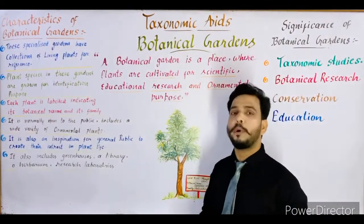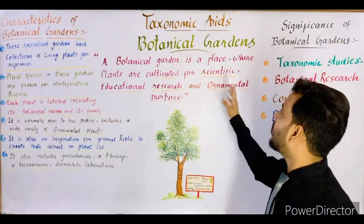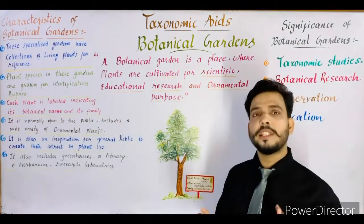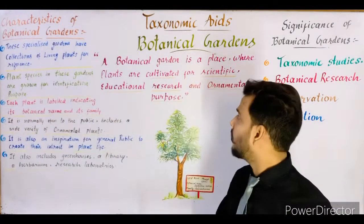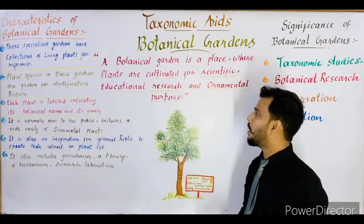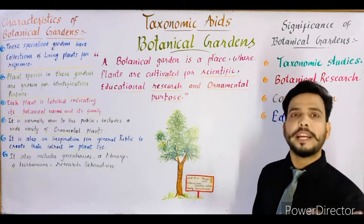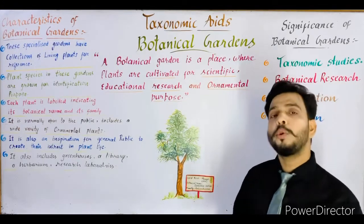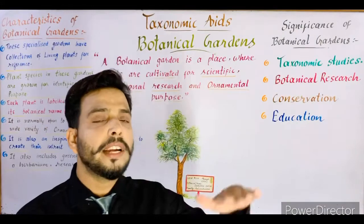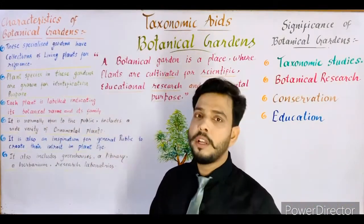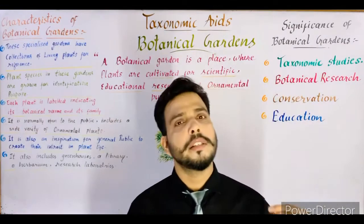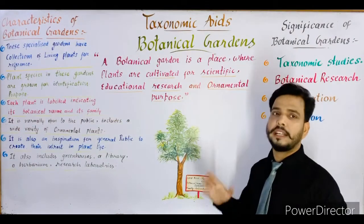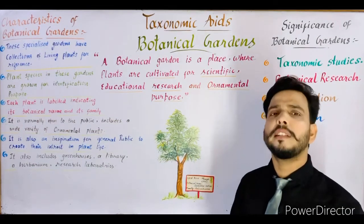So, what is a botanical garden? A botanical garden is a place where plants are cultivated by man for scientific research, educational, and ornamental purposes. In botanical gardens, a wide variety of plants are grown for study, research, and ornamental purposes.